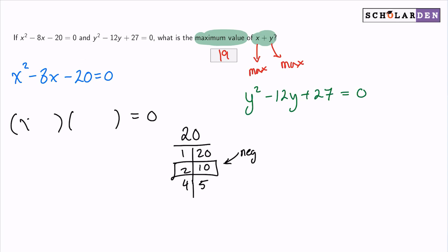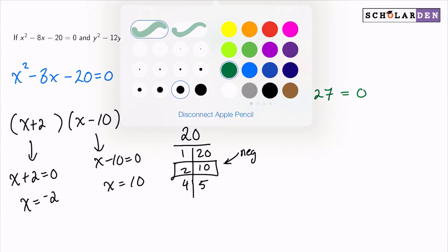So there we are. We have x plus 2 and x minus 10. With that said, we can then split off our equations to see what those zeros are. So here, x would be negative 2. And here, x would be positive 10. So remember, we wanted the maximum possible value for x. And that over here is 10.